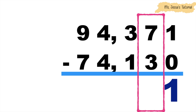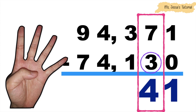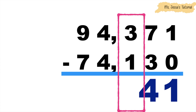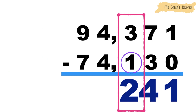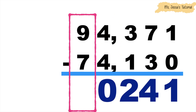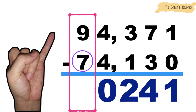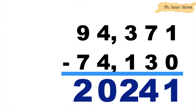Let's proceed to the tens place. 7 minus 3. 3 on your mind, let's count forward until we reach 7. 3, 4, 5, 6, 7. So 7 minus 3 is equal to 4. Let's proceed to the hundreds place. 3 minus 1. 1 on your mind. 1, 2, 3. We have 2 here. Then 4 minus 4 is equal to 0. Then 9 minus 7. 7 on your mind. Let's count forward until we reach 9. 7, 8, 9. So 9 minus 7 is equal to 2. The difference is 20,241.